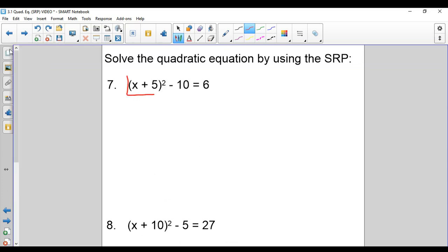So you're trying to get whatever's being squared by itself. So you add 10 to both sides. You get X plus 5 squared equals 16. Square root both sides.